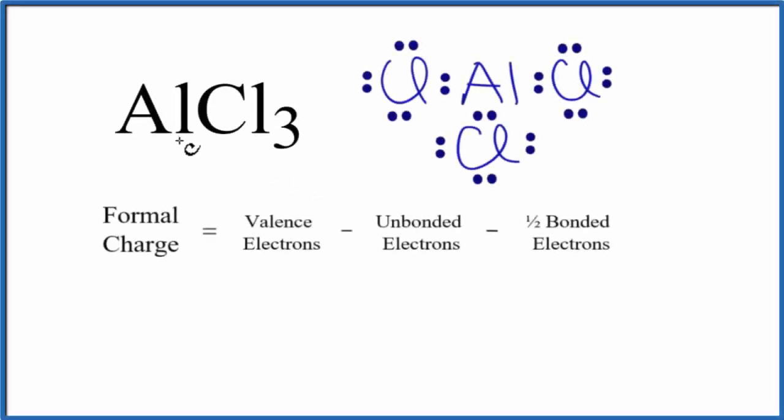To find the formal charge for each element here in AlCl3, aluminum chloride, we'll use this Lewis structure here and then this equation.